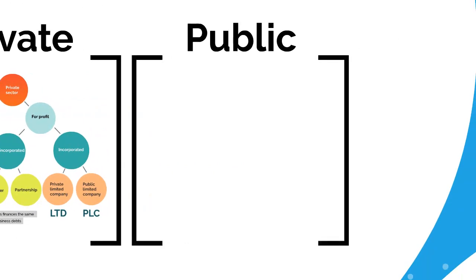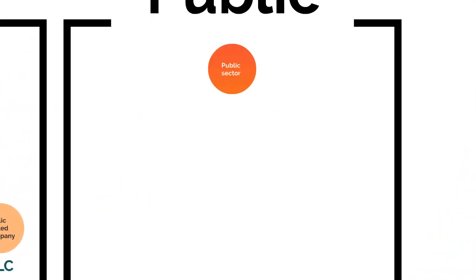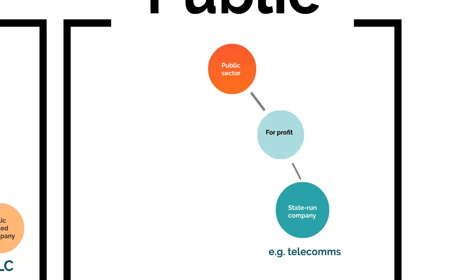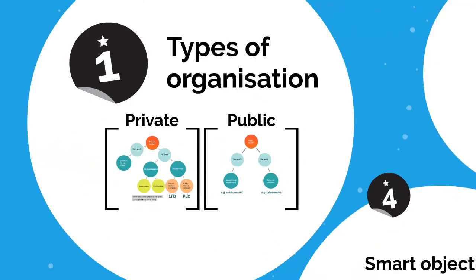Now if we look at the public sector, it's a very different situation. In the public sector we can still have for-profit organizations like a state-run company — telecoms or rail or something. More normally we'll see non-profit organizations such as government departments, such as the environment department. So those are the main types of organization.